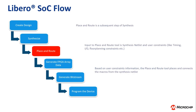Let's discuss the Libero Design Tool Flow. The first step is to create the design either by using Smart Design or HDL. After creating the design, the second step is synthesis. Once the design passes synthesis successfully, the third step is place and route. After place and route, the next step is to generate FPGA array data and then generate Bitstream. Finally, program the device using programmers.